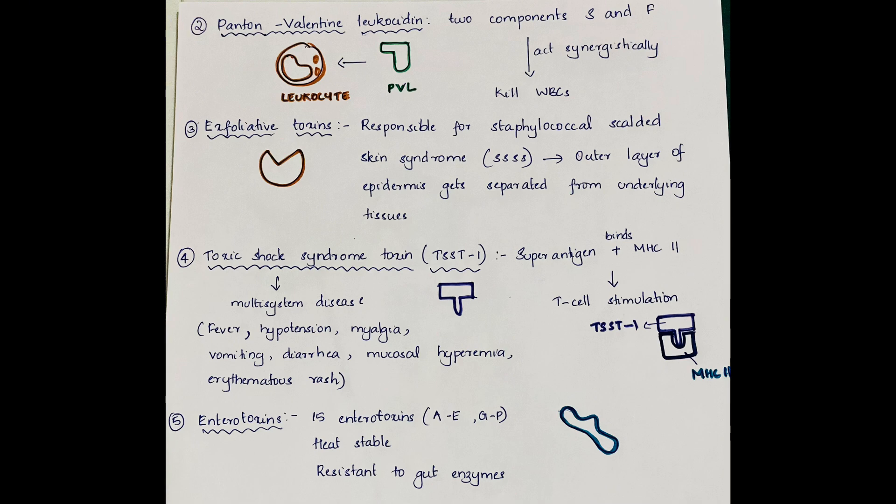Panton-Valentine leukocidin is composed of two components S and F which act synergistically to kill white blood cells.